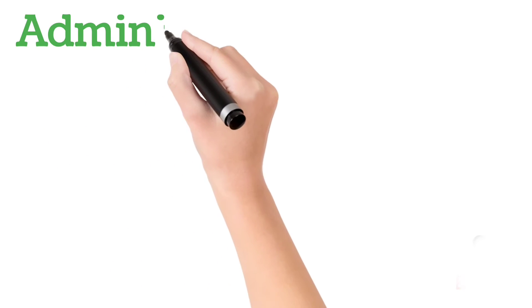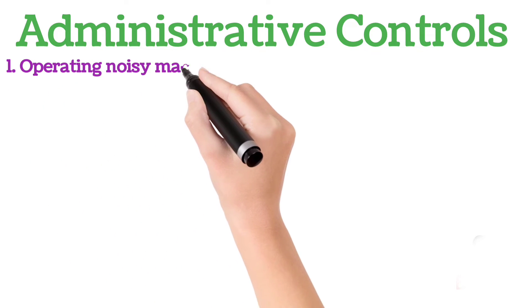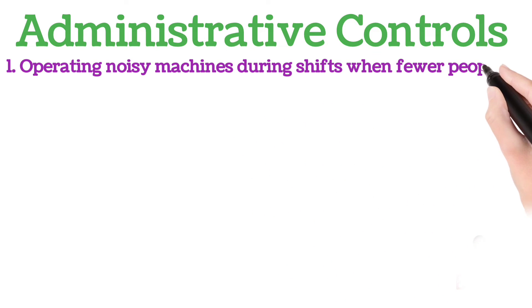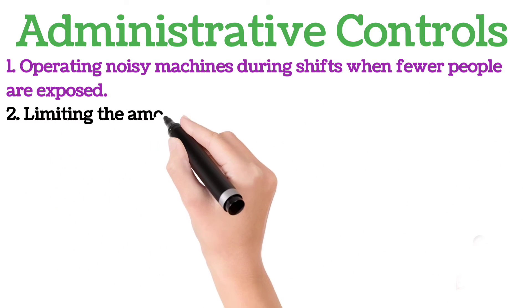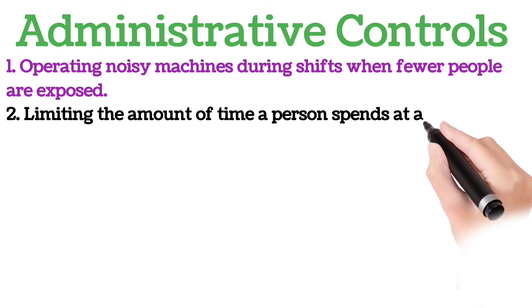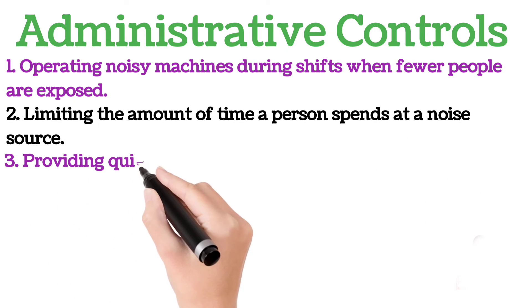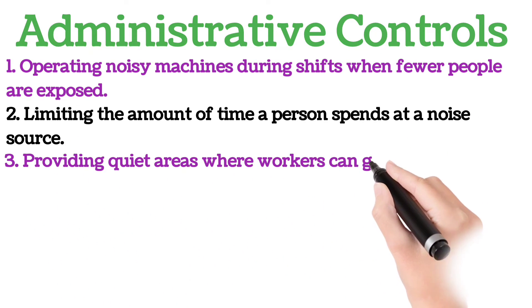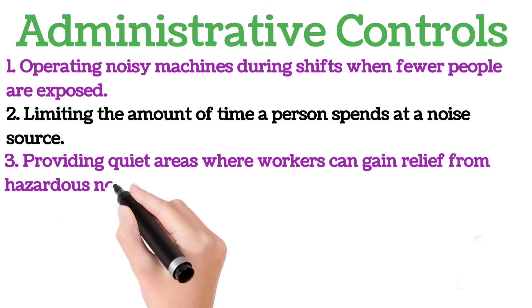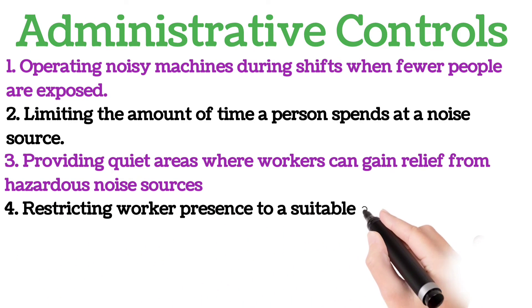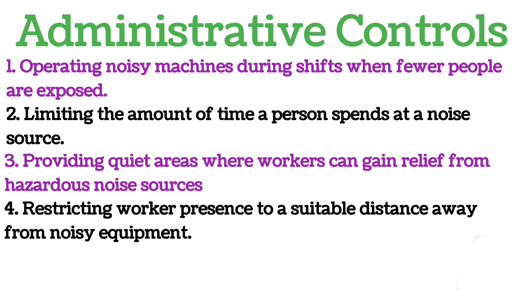Administrative controls are changes in the workplace that reduce or eliminate the worker's exposure to noise. Examples include: operating noisy machines during shifts when fewer people are exposed, limiting the amount of time a person spends at a noise source, providing quiet areas where workers can gain relief from hazardous noise sources, and restricting worker presence to a suitable distance away from noisy equipment.